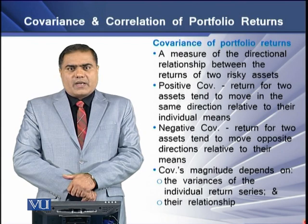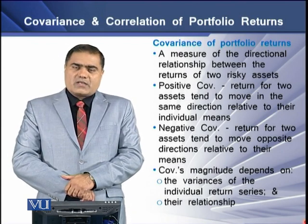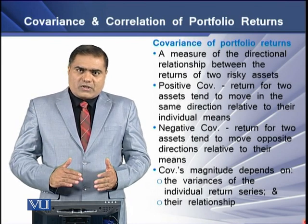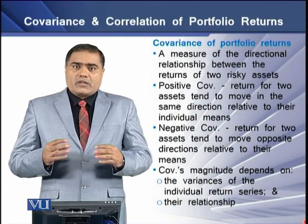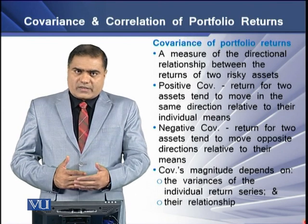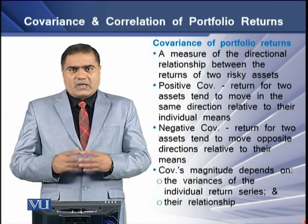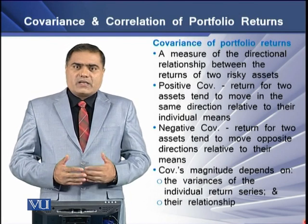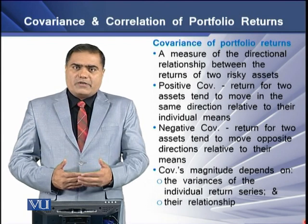By negative covariance we mean the returns for the assets tend to move in the opposite direction relative to the individual means of the individual assets. The magnitude of the covariance depends on two factors: the first is the volatility of the individual assets' returns, and the second is the relationship between the returns of the individual assets.